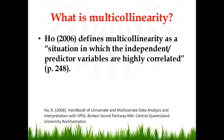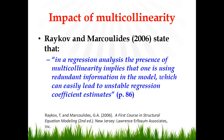How to define multicollinearity? Who (2006) defines it as a situation in which the independent predictor variables are highly correlated. Rekov and Marcolides state that in a regression analysis, the presence of multicollinearity implies that one is using redundant information in the model, which can easily lead to unstable regression coefficient estimates. There are some other side effects and negative implications also.